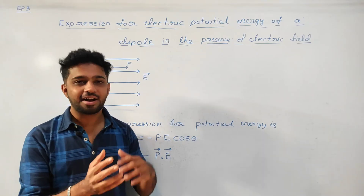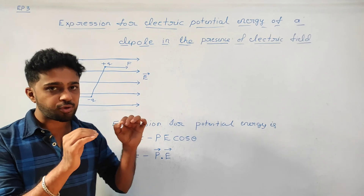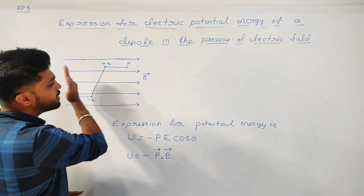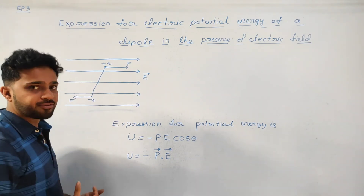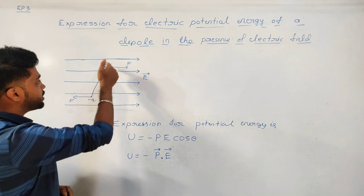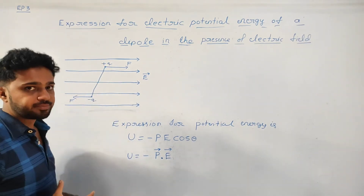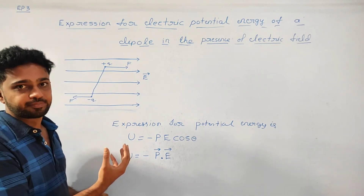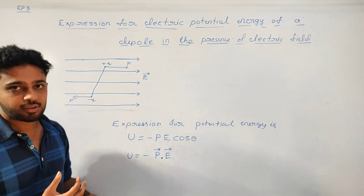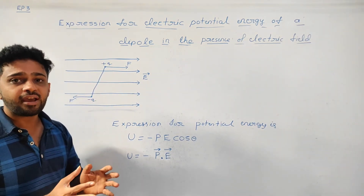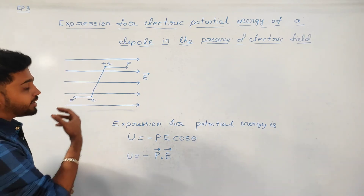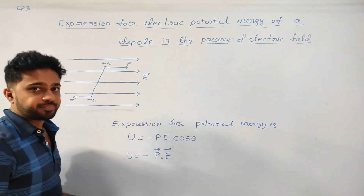The next concept is the expression for potential energy of a dipole in the presence of an external electric field. A dipole is a system of two equal and unlike charges separated by a small distance — so plus Q and minus Q. When placed in an external electric field, it experiences force: force acting on positive charge in one direction, and force acting on negative charge in the other direction. These equal and unlike forces create a couple, and potential energy is developed.